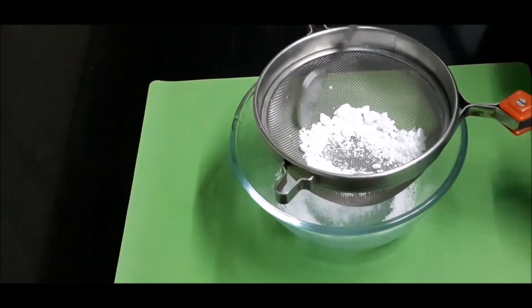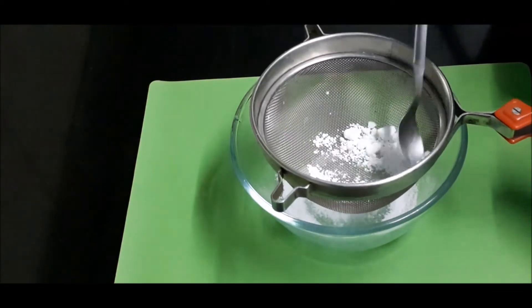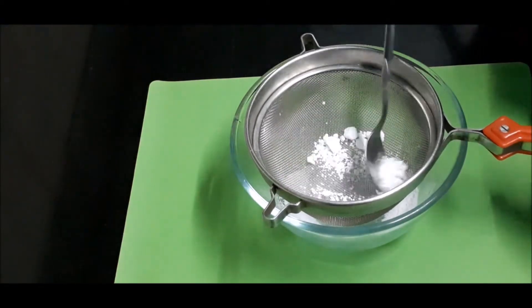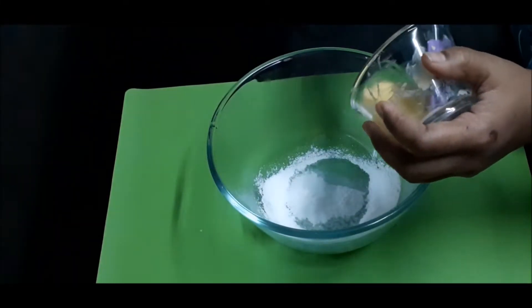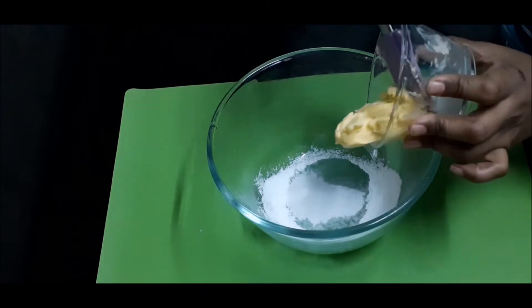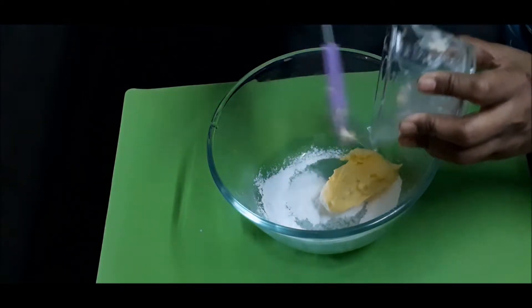Now I am going to sieve the powdered sugar to avoid the lumps. Now I am going to add the soft butter into the powdered sugar.